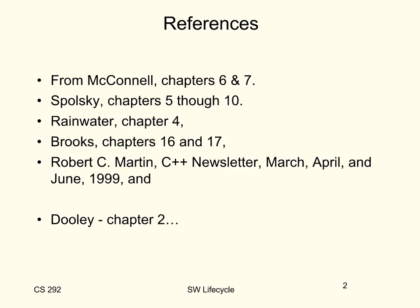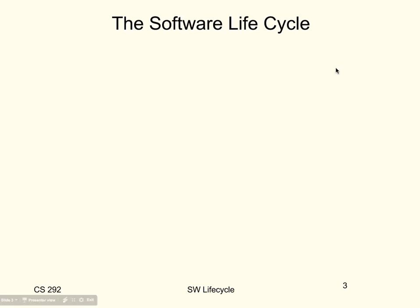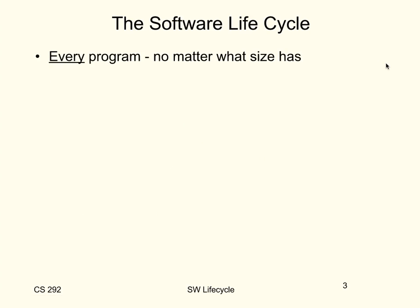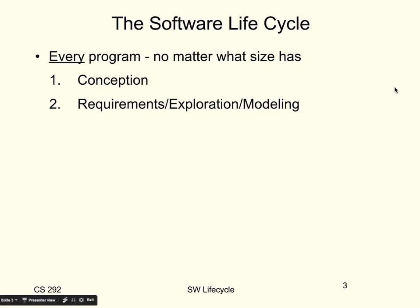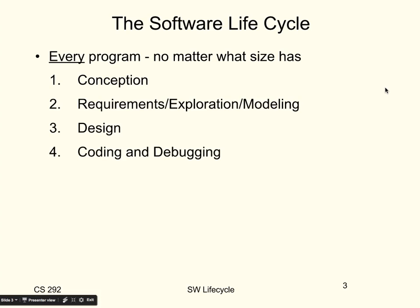So, the software life cycle is something that every program has. Every program, no matter how big it is, has conception — you have an idea for the program. Once you have an idea, you have to figure out what exactly you're going to do. That's requirements gathering, exploration, modeling, those kinds of things. Once you think you know what you're going to do, you have to design it. You then write the code, and since none of us is perfect, you'll have to debug it as well.